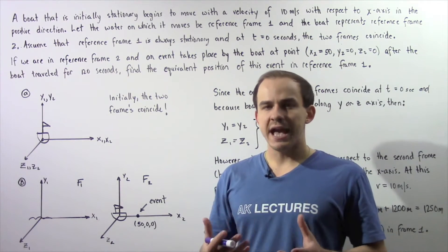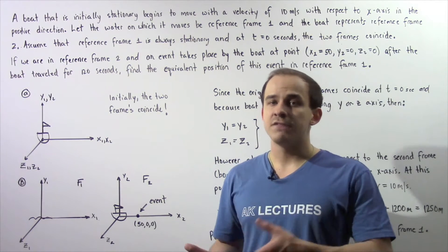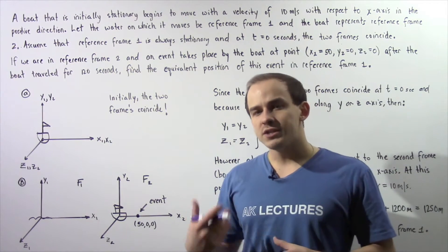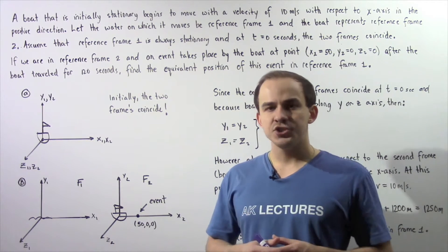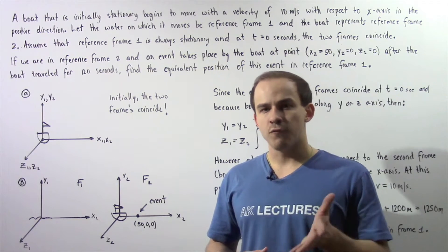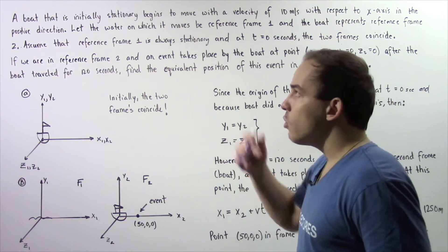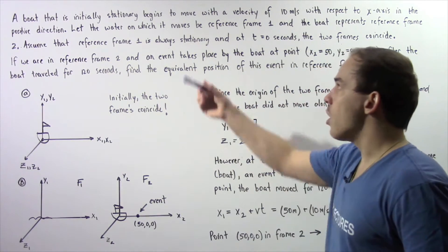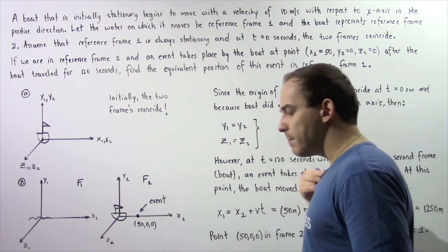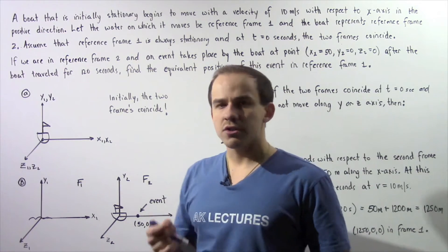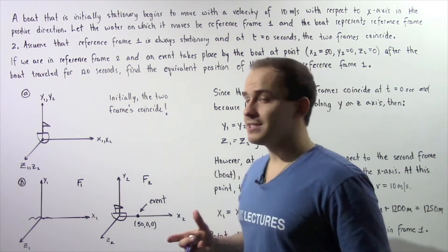In the previous lecture we examined how we can transform the location or position of an event from one reference frame to a second reference frame. Now let's look at this application of the Galilean transformation for position with the following example. A boat that is initially stationary on water begins to move with a velocity of 10 meters per second in the positive direction along the x-axis. The boat does not move along the y or z-axis.